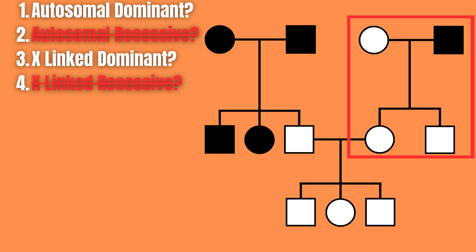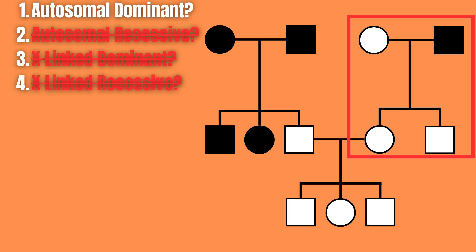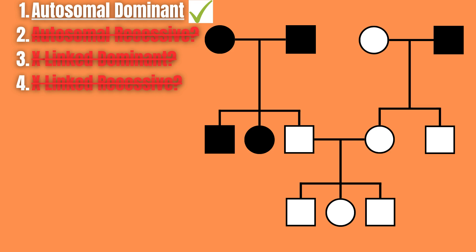Here we can use another rule to eliminate another option. Rule two states that if the trait is X-linked dominant, an affected father will always have affected daughters. But this is not the case here. That leaves us with an autosomal dominant pedigree.